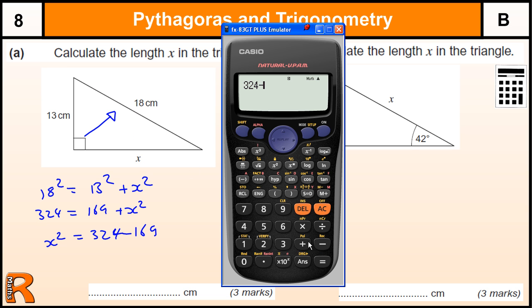So 324 minus 169 gives us 155. That is what x squared is. And so we need to square root that answer to get 155 or 12.4 to three significant figures.